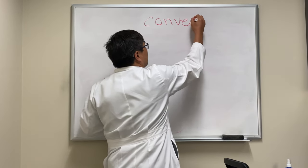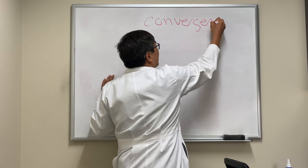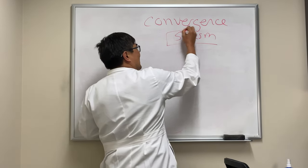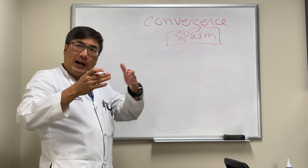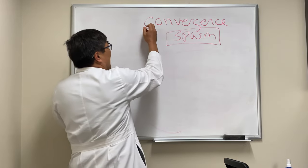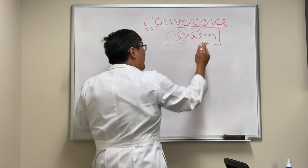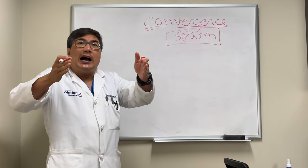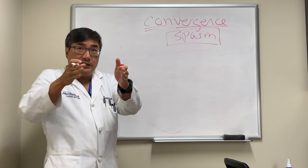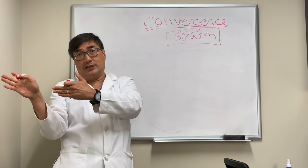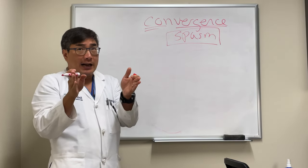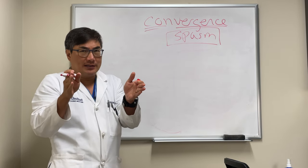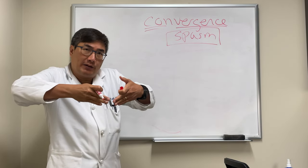Convergence spasm is a very interesting phenomenon — it is what it sounds like. It's spasm, so it's inappropriate firing of the muscles, and this time it's going to be convergence. A vergence is a slow movement that's in the opposite direction, so it's different than a version, which goes in the same direction. It is conjugate — two eyes, but going in the opposite direction, with both medial recti firing.